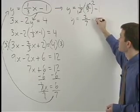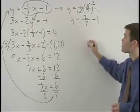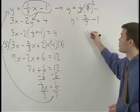So y equals 2-sevenths minus 1, which can be thought of as y equals 2-sevenths minus 1 over 1.